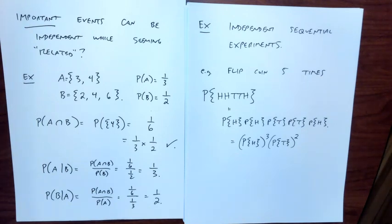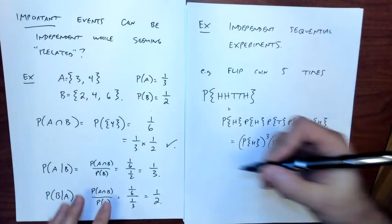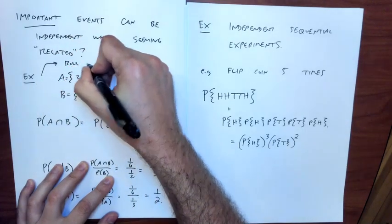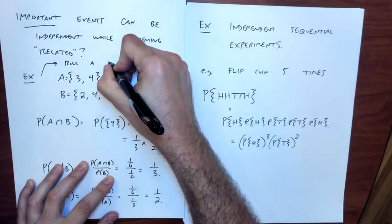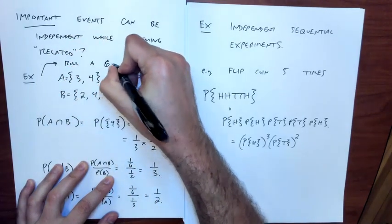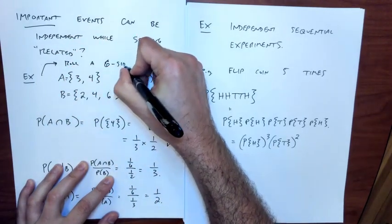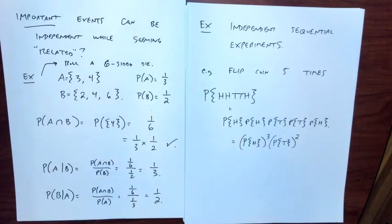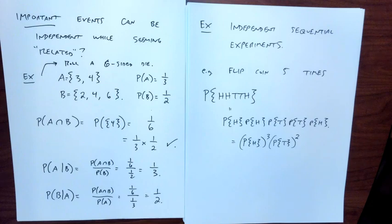These probabilities are for rolling a D6 — a six-sided die. I get so used to rolling dice in my head that I sometimes forget to say that explicitly.